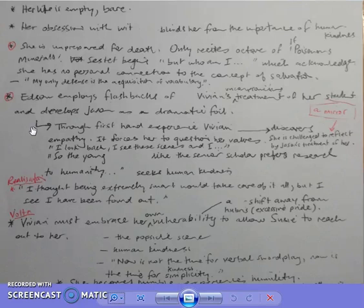She also states around this time, talking about Jason, 'so the young doctor, like the senior scholar, prefers research to humanity.' Then she says something along the lines that Vivian, at this point, is in need of human kindness, and it's not there for her. Her vulnerability, her isolation - she's in this room, isolated from the rest of the world, and she feels very vulnerable.